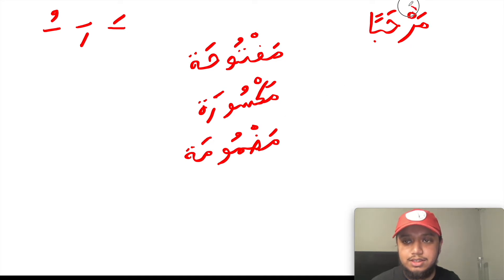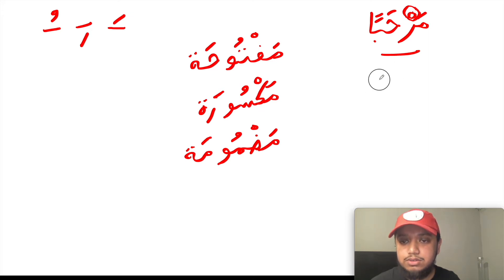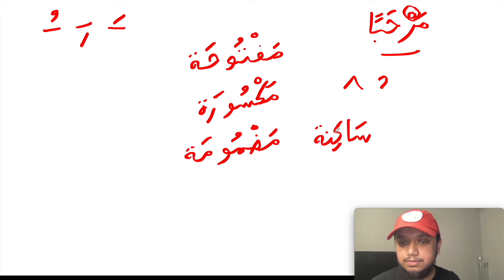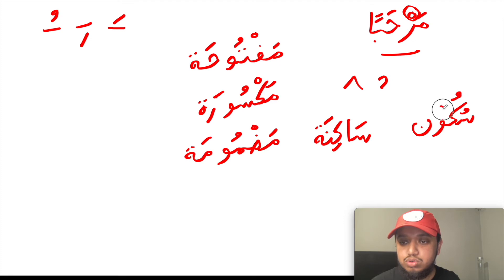As you can see, the letter ra in Marhaba has neither of those markings. This mark here is known as a sukoon — sometimes written as an apostrophe-type mark or an upside-down triangle. A letter with a sukoon on it is called saakina, and the mark itself is called sukoon.